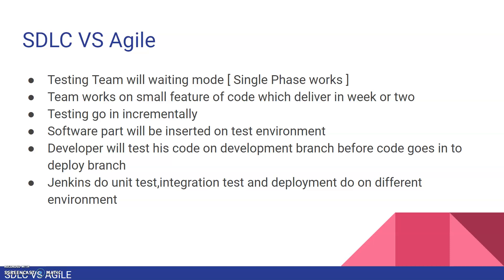The team works on small features of the code which are delivered within a week or two. Agile has a small team working on one feature, delivering it within the same cycle. Testing is done incrementally — first feature is added and tested, then the second feature, then the third. This incremental testing means you do not need to do a full exhaustive test for everything at once; when you develop a specific feature, you test that feature thoroughly.